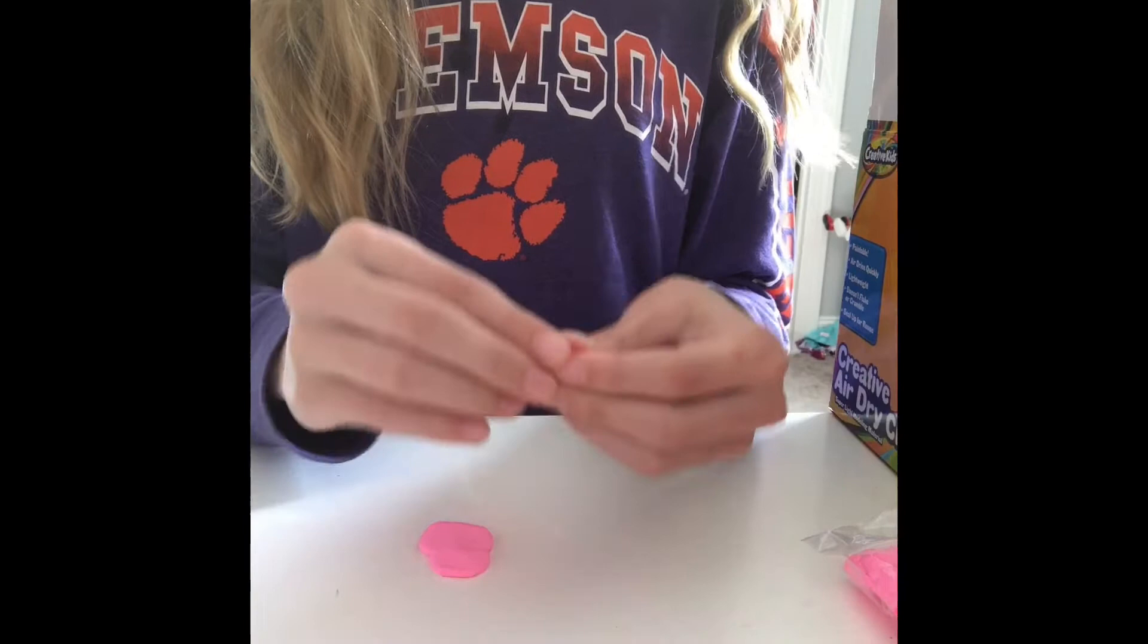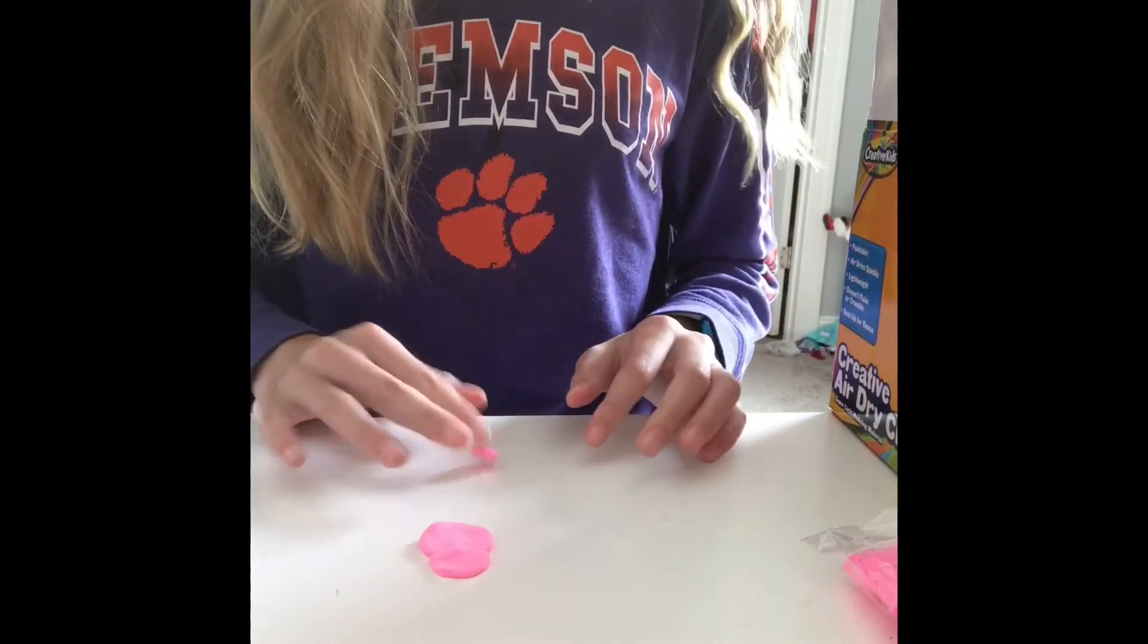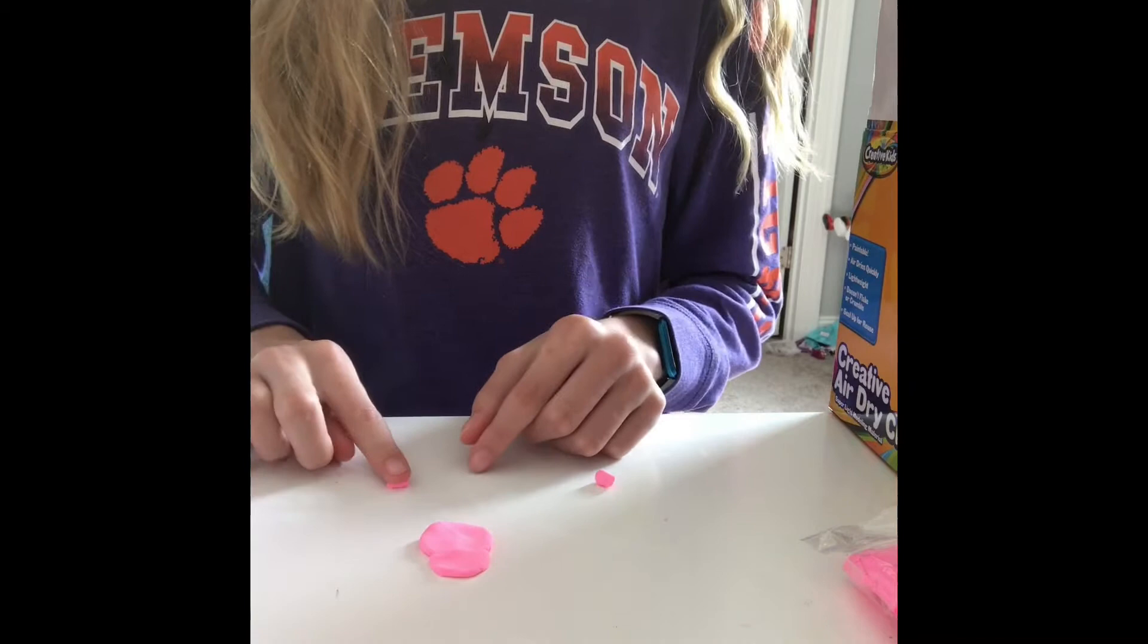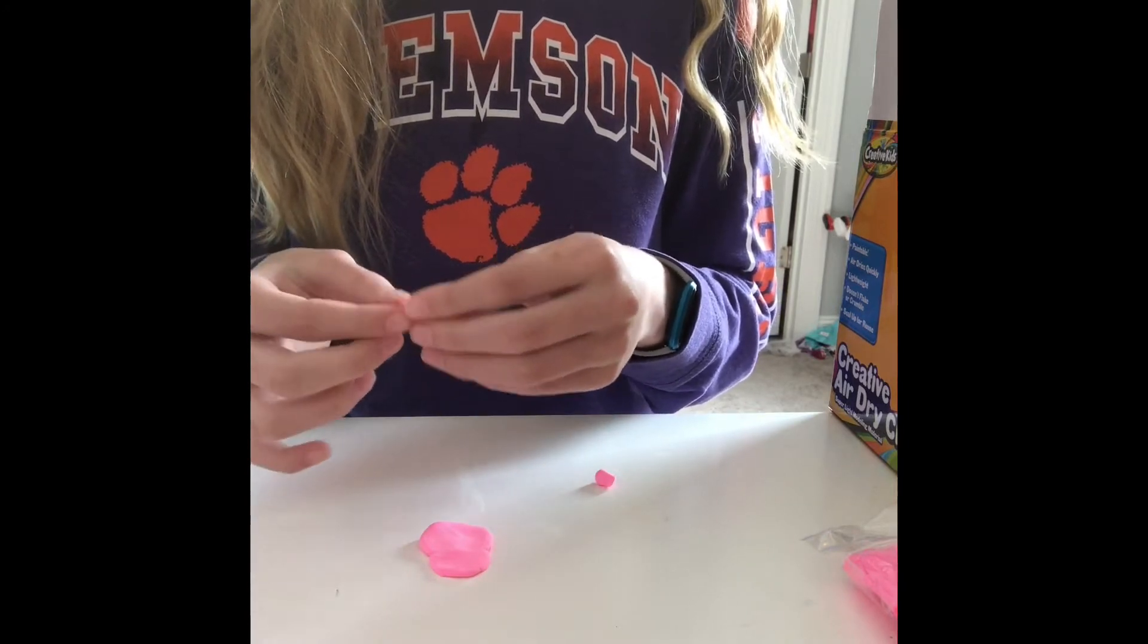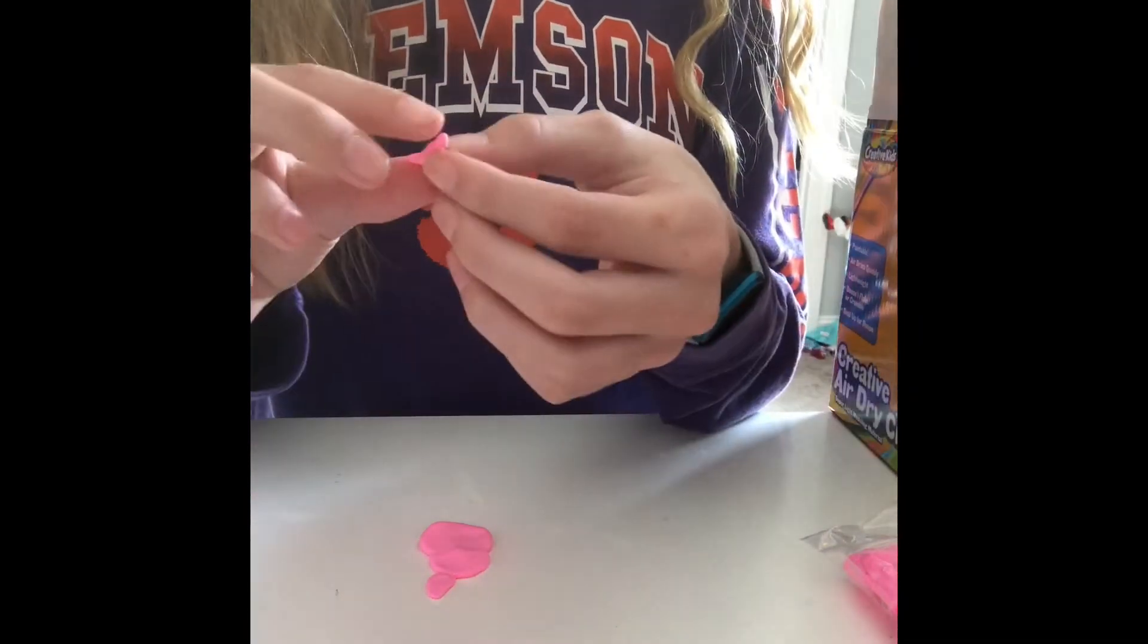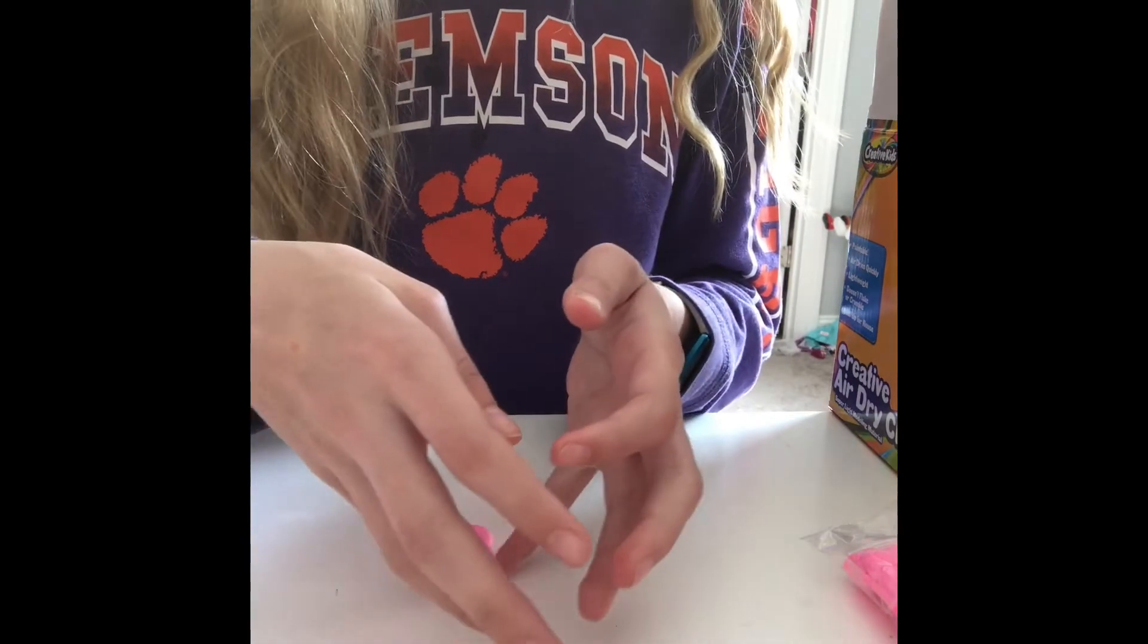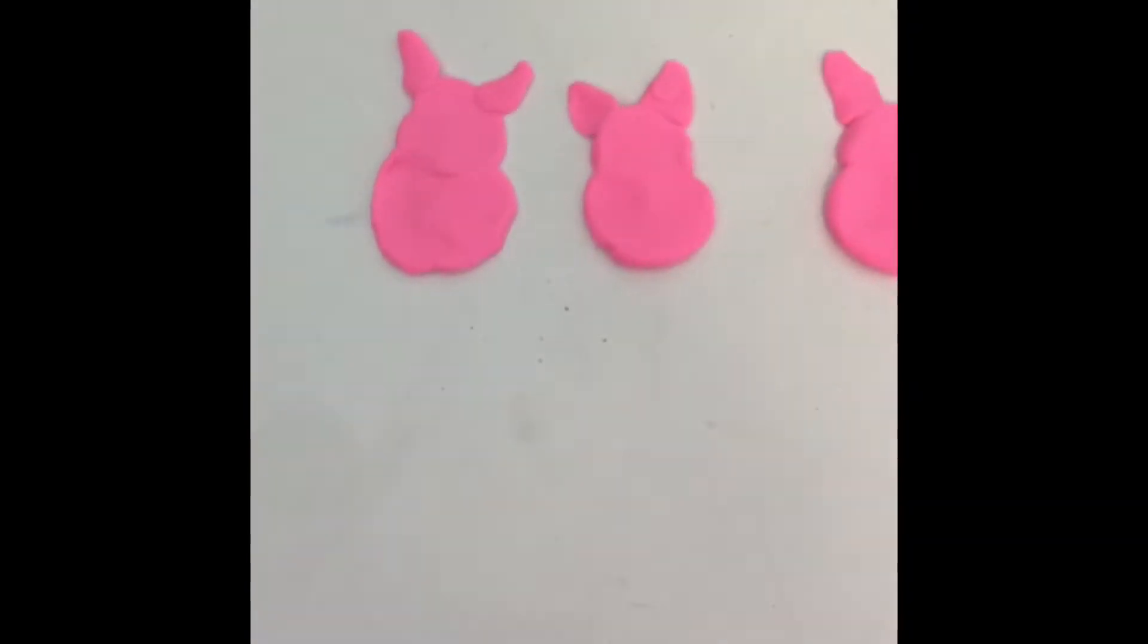To make the ears, take a little piece and roll it into kind of like a snake, then push it against your finger and shape it into like a little triangle. You might have to take out some clay if needed or add more clay. Slowly but surely it will form an ear. And this is the finished product. Now I'm going to wait for them to dry.